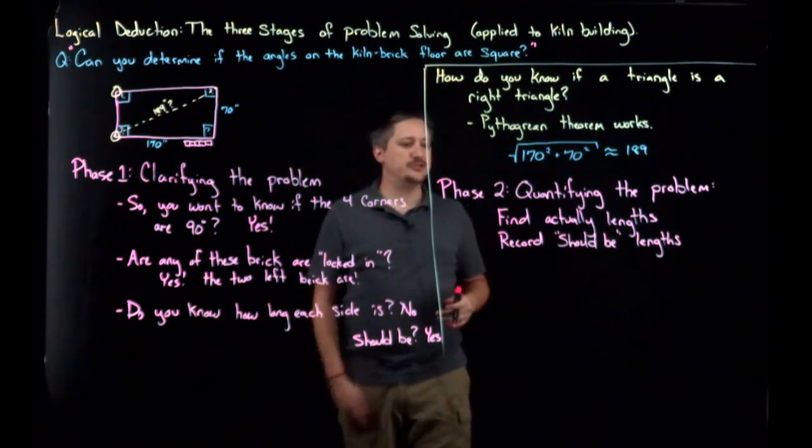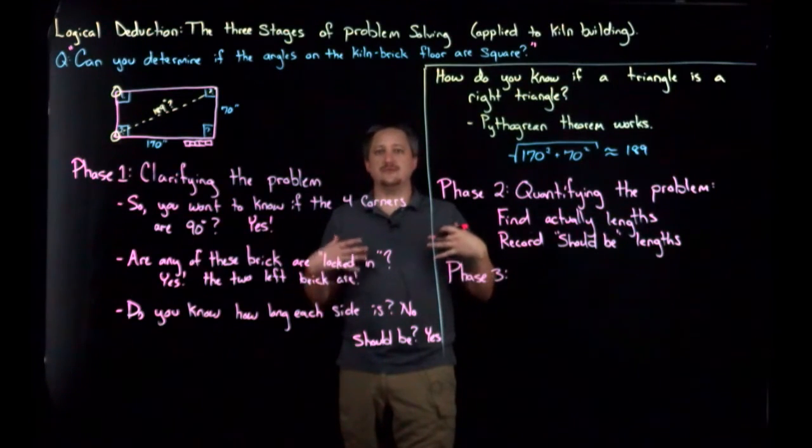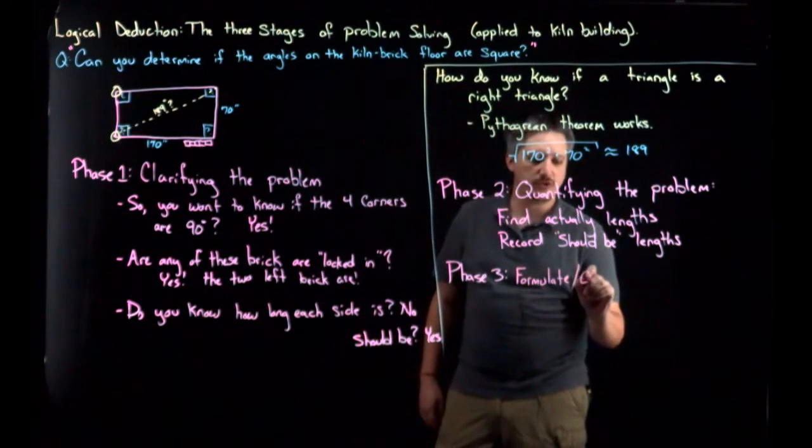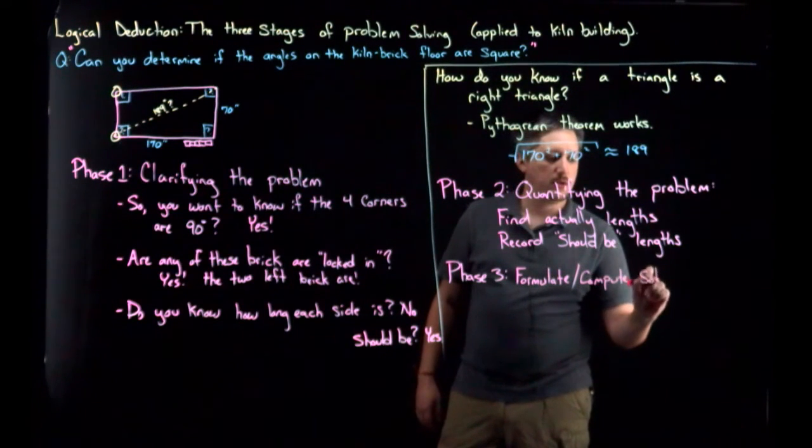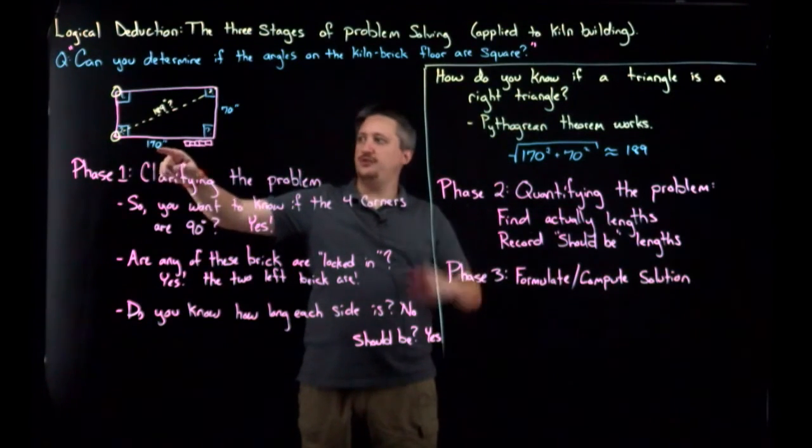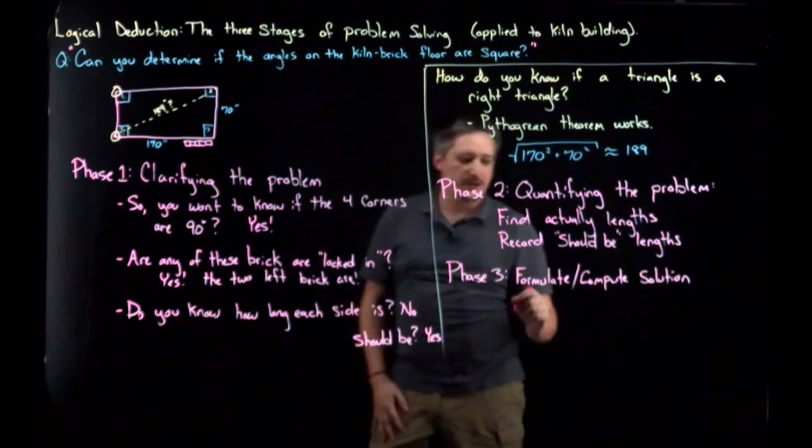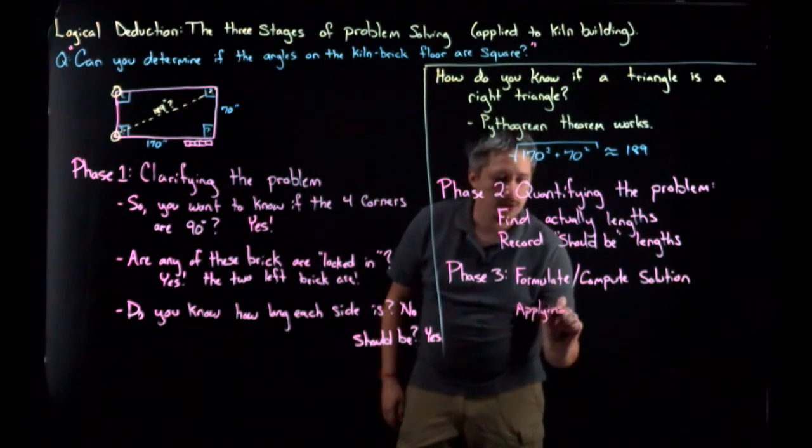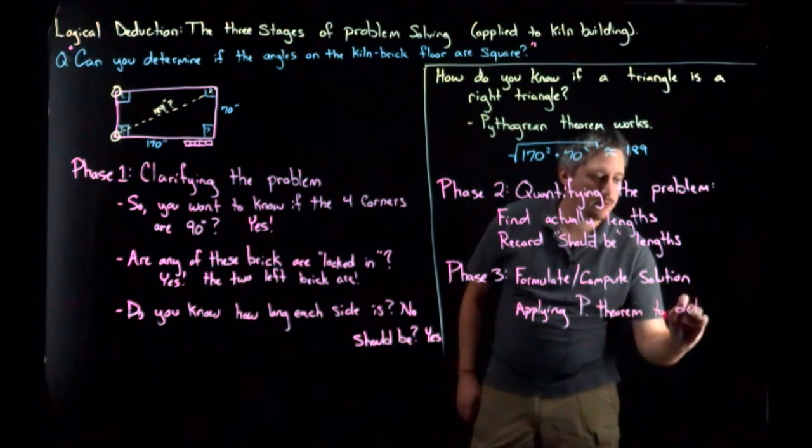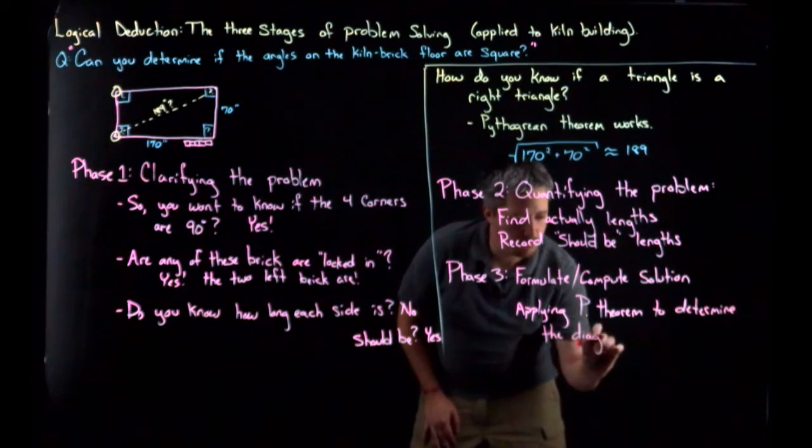Then phase three, this is actually formulating your solution. Formulate or compute solution. So, this is where I would apply my deductive logic. I had quantified in phase two the pieces of the triangle I knew, determined the thing I needed was this diagonal, 189. So, that told me that I need the Pythagorean theorem. Phase three was applying Pythagorean theorem to determine the diagonal.